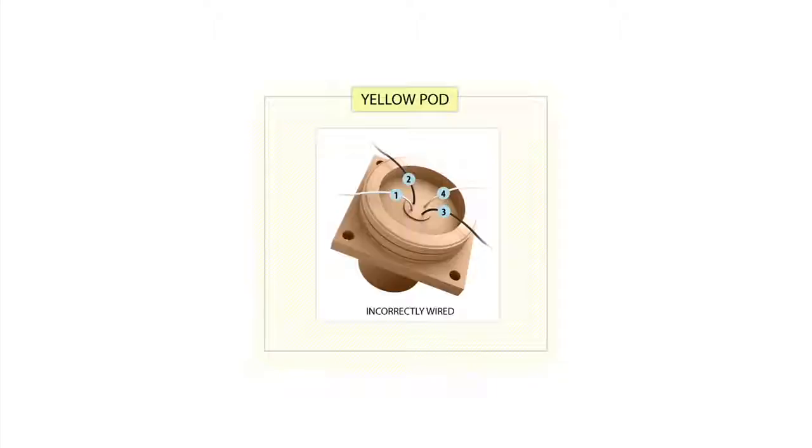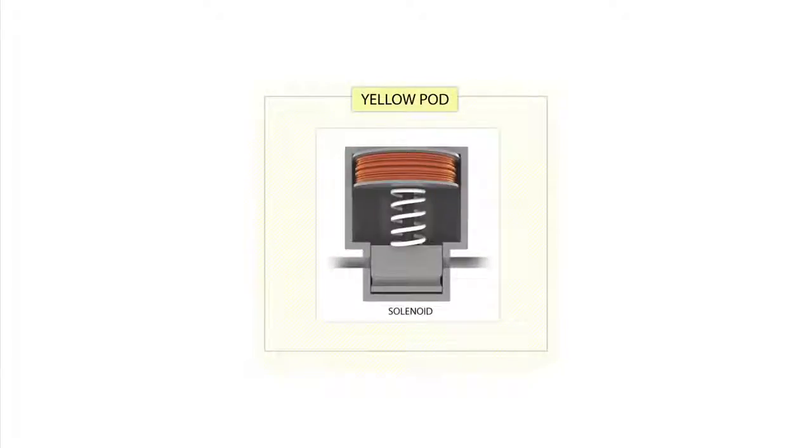And within the redundant Yellow Pod, the solenoid for the blind shear ram had been miswired. The solenoid valves were controlled by two coils of electrical wire. These two coils were designed to work in concert, generating a magnetic field strong enough to operate the valve. But within the miswired solenoid valve, the two coils actually opposed each other, leaving the valve paralyzed.